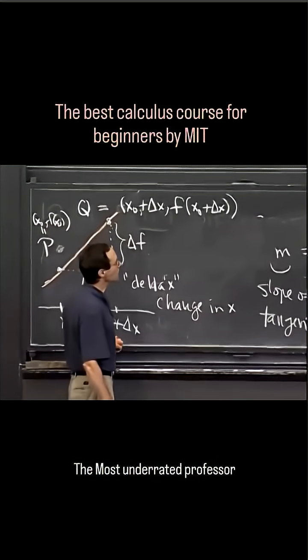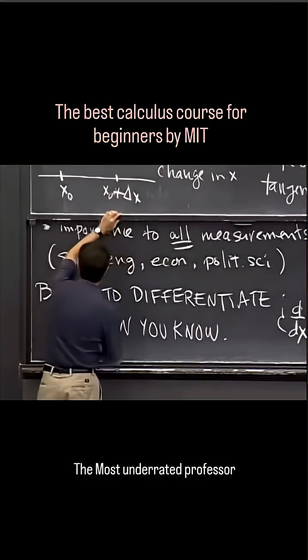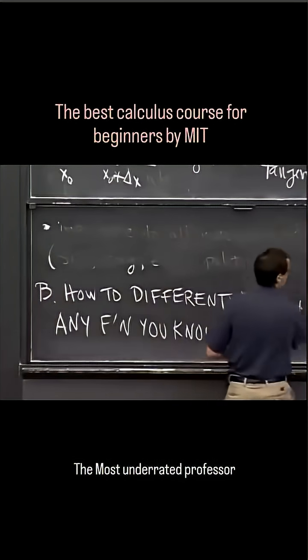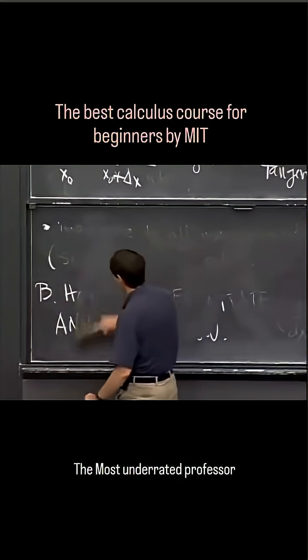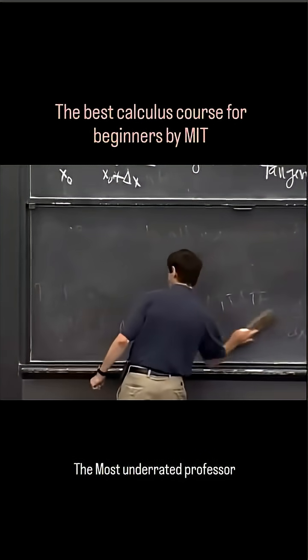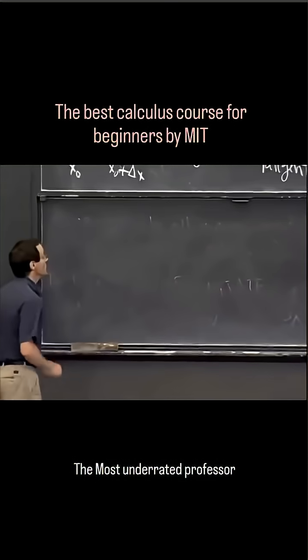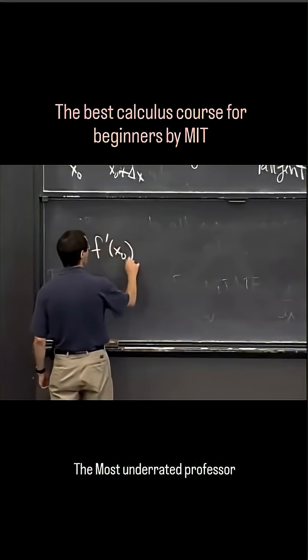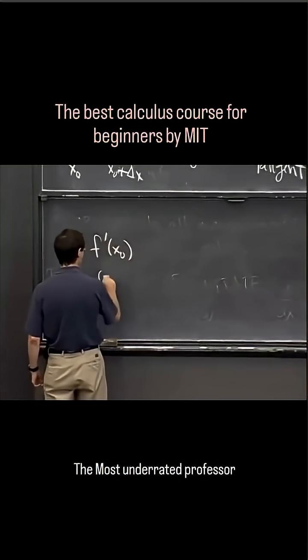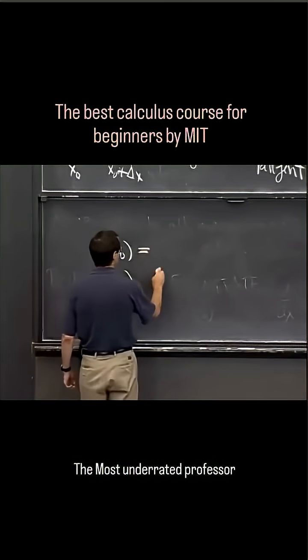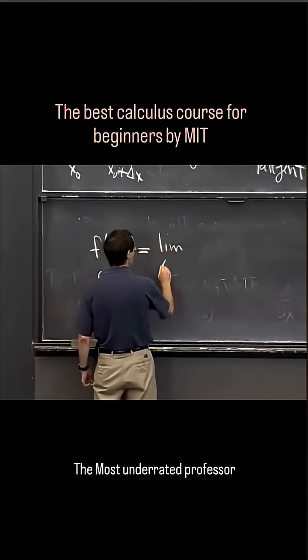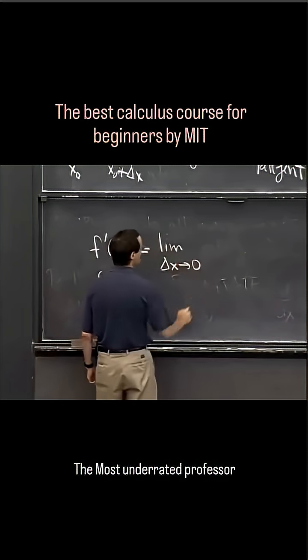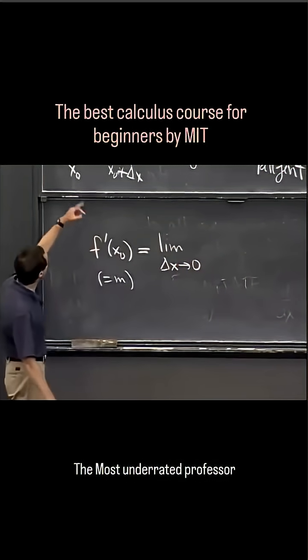And now I can write a different formula for the derivative, which is the following. So this f prime of x0, which is the same as m, is going to be the limit as delta x goes to 0 of the change in f.